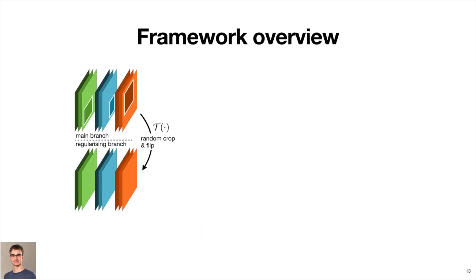We implement this idea with the following framework. It contains two computational branches, the main and the regularizing branch. We use multiple series of the original frames corresponding to different video clips, denoted here in different colors, as the input to the main branch, and generate a random similarity transform in the regularizing branch.